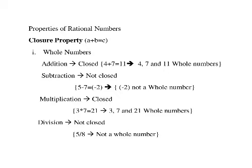So whole numbers are not closed under subtraction. In multiplication, the whole numbers are closed under multiplication. For example, 3 into 7 equals 21 — the numbers 3, 7, and 21 are whole numbers. In division, whole numbers are not closed under division. For example, 5 divided by 8 equals 5 by 8, which is not a whole number.